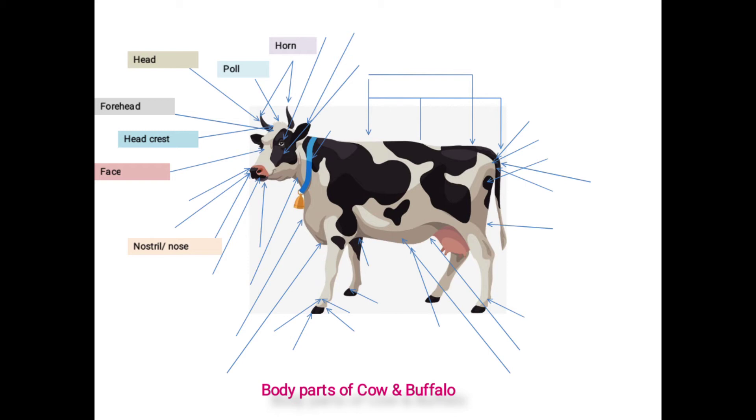Nostril included muzzle. This is a black portion with grey spot above the upper lip. Muzzle indicates the general health condition. During the sound health it is moist while it is dry during sickness.